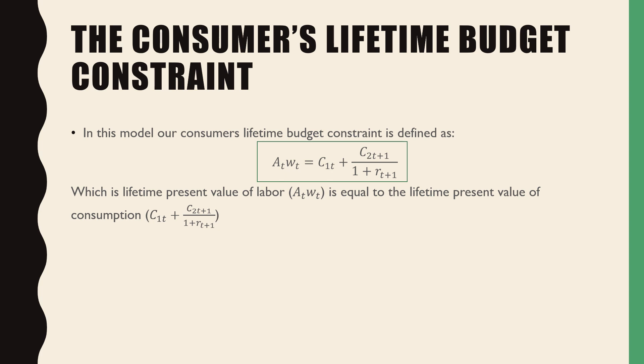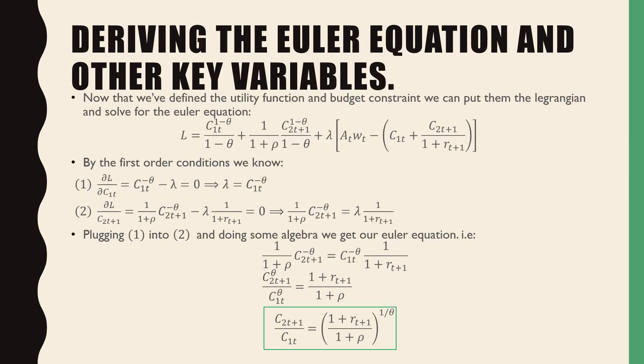Also in this model our consumer's lifetime budget constraint is defined as following: AtwT is equal to C1t plus C2t+1 all over 1 plus rt+1, which is the present value of labor is equal to the lifetime present value of consumption. So now that we've defined our utility function and budget constraint, we can put them in the Lagrangian and solve for our Euler equation.